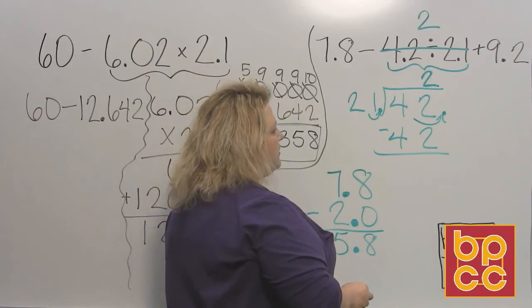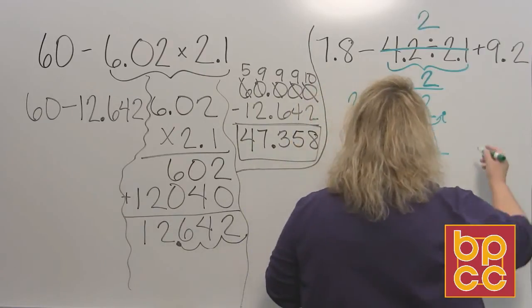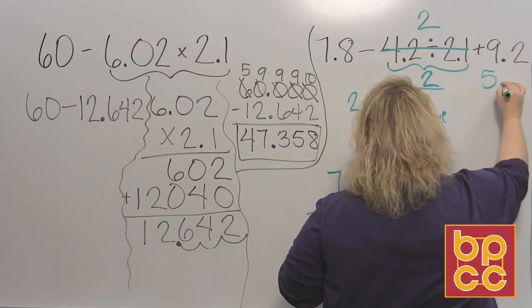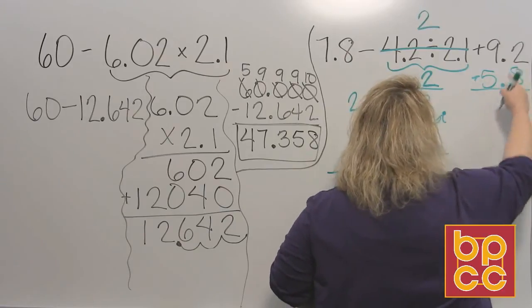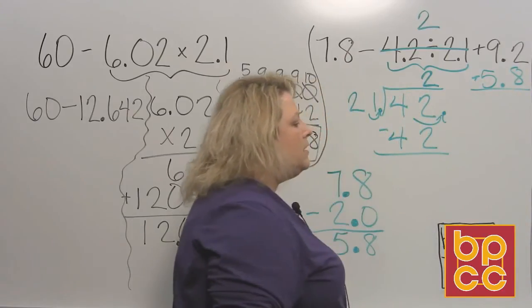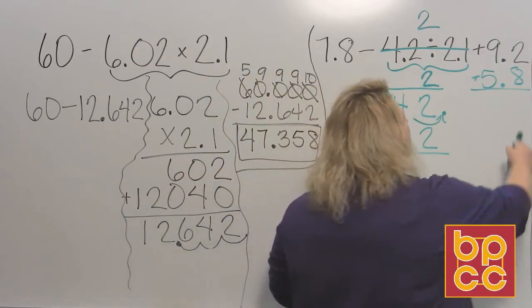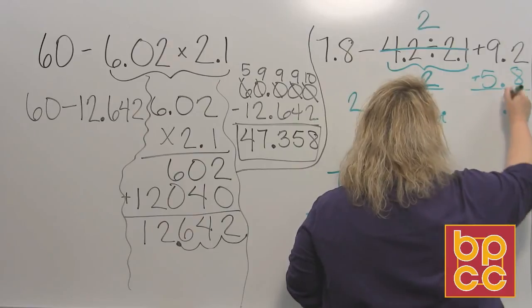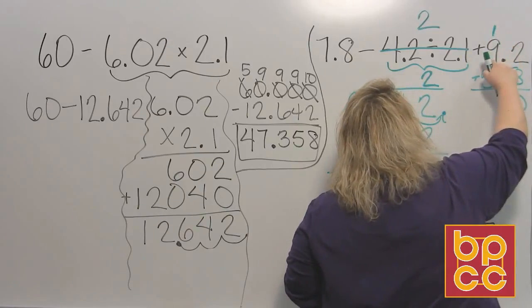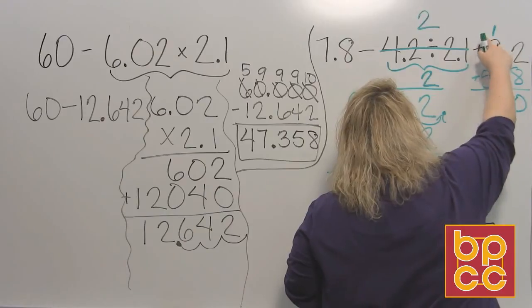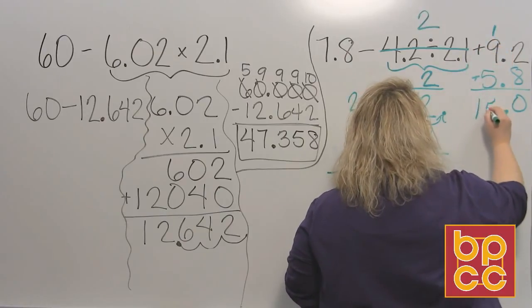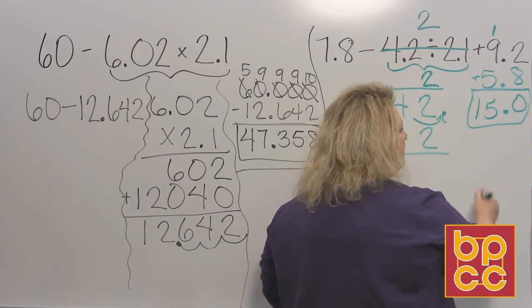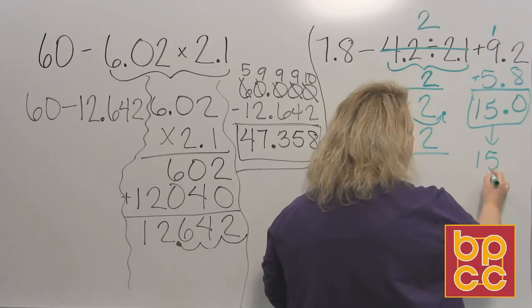And now I have 1 step left. 5 and 8 tenths is now going to be added to 9 and 2 tenths. So that's the last thing I'm going to do. So 2 plus 8 is 10. My decimal stays, it drops down because it's addition. So that would be 9 plus 1 makes 10, 10 plus 5 makes 15. So that comes out to be a nice round number. 15 and 0 tenths, which is the same thing as just the number 15.